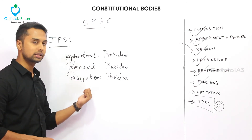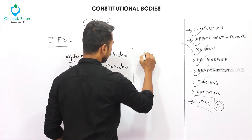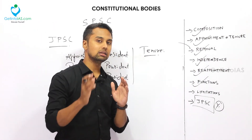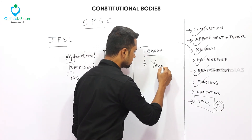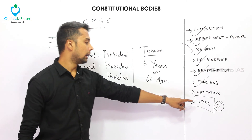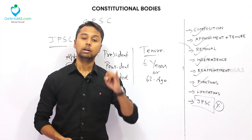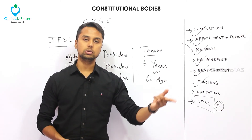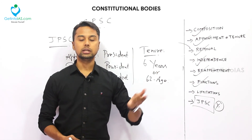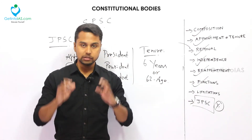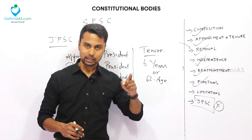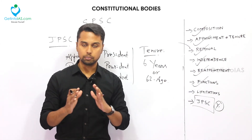Appointment, removal, and resignation are all done by the president. About the tenure: although appointment, removal, and resignation are all by the president, the tenure is 6 years or 62 years of age — whichever is earlier — not 65. That is one point where you can get twisted. About the annual report: UPSC submits its annual report to the president, who submits it to parliament. SPSC submits its annual report to the governor, who submits it to the state legislative assembly. For JPSC — you might assume the report goes to the president since everything is done by the president — but no. JPSC submits its report to the governor, and the governor submits it to the state legislative assembly.